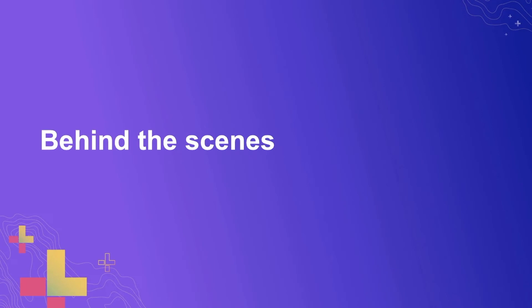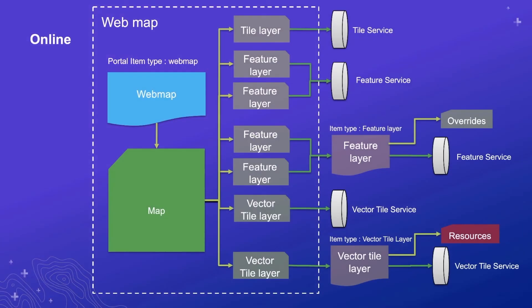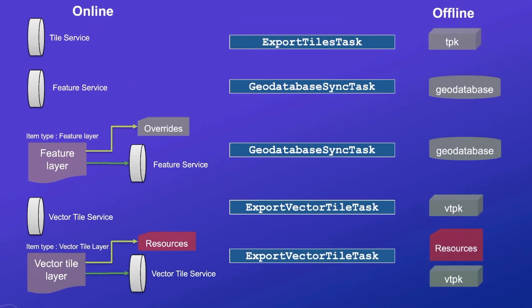Let's take a quick look behind the scenes at what's happening — this is important to understand the capabilities of the runtime and the flexibility you have as a developer. If we remember the web map diagram from earlier, we have the web map itself with its layers pointing to services. These services map to offline files that are pulled down as part of the mobile map package, and for each of these types there is actually a runtime task you can use to pull down these data sources yourself. However, the offline map task and map sync tasks take care of all this behind the scenes.